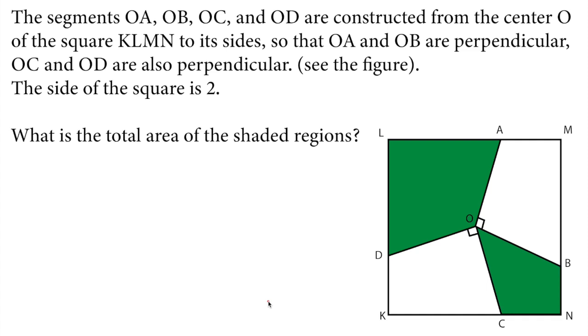Let's read the question. The segments OA, OB, OC and OD are constructed from the center O of the square KLMN to its sides so that OA and OB are perpendicular.